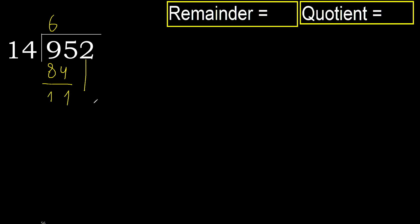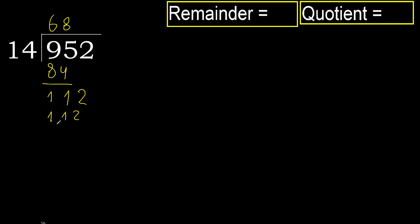Next: bring down to get 112. 14 multiplied by 9 is greater. Multiply by 8: 112 is not greater. OK.